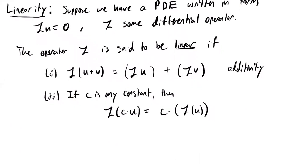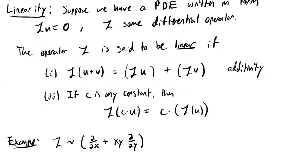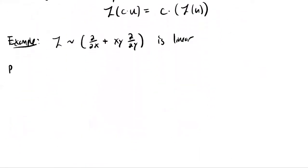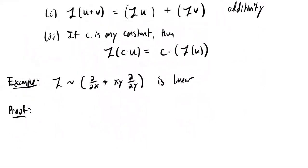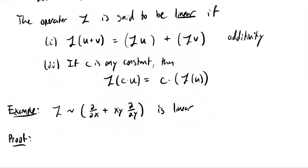What's an example of a linear operator? Let's use L defined by d/dx plus xy times d/dy. This is linear. To prove that a given operator is linear, you check both conditions. If both are true, it's linear. Let's check condition one.